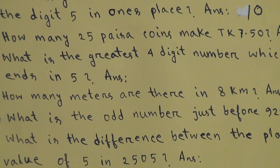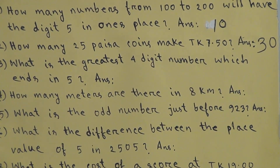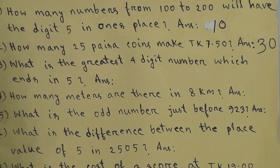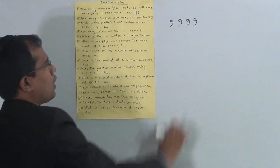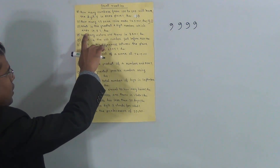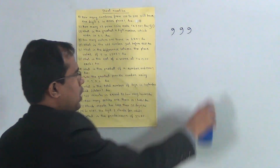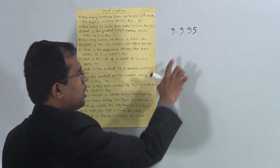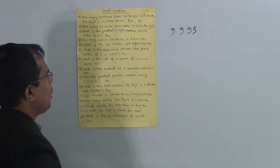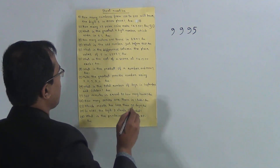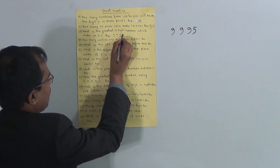Question 3: what is the greatest 4-digit number which ends in 5? The greatest 4-digit number is 9999, but it ends in 9. Since the number must end in 5, we replace the last digit with 5. So the answer is 9995 — nine thousand nine hundred ninety-five.